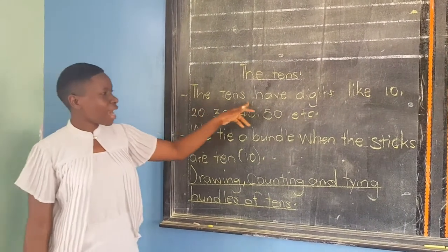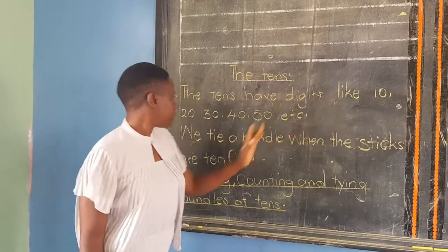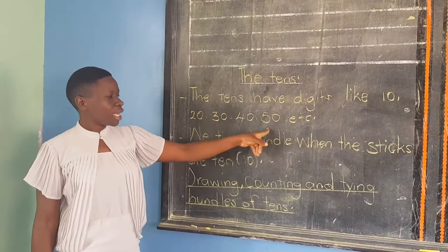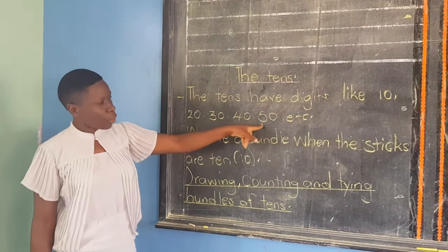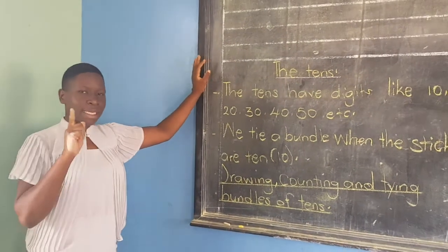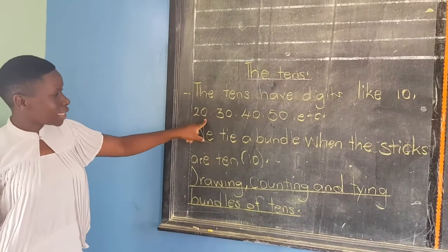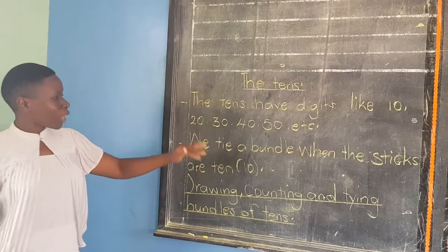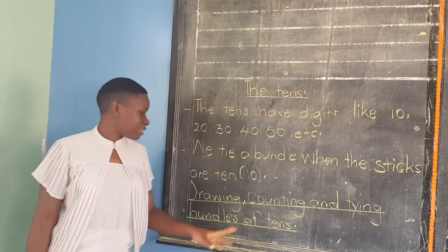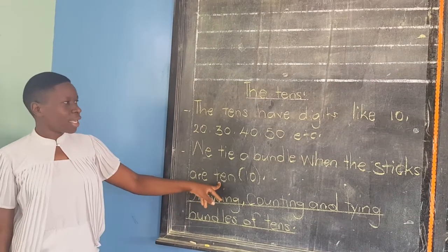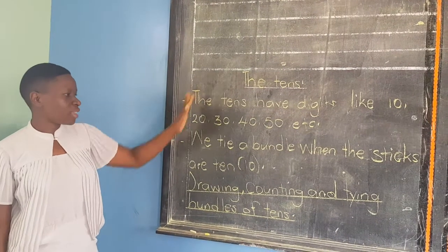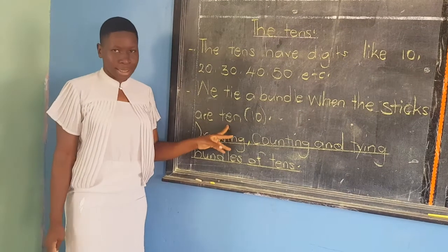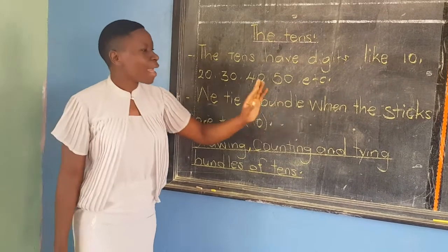We say that tens have digits like 10, 20, 30, 40, 50. If you can see and compare, the bundles of ones always have one number, and bundles of tens — all numbers of tens — have two numbers. We tie a bundle when the sticks are 10. In these tens, we are going to tie bundles, but in that bundle there must consist of 10 sticks.